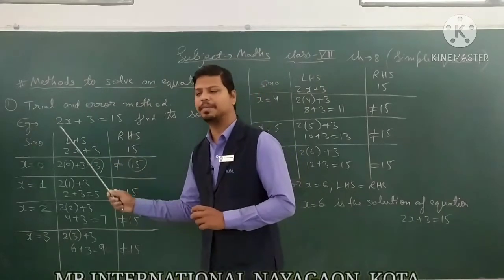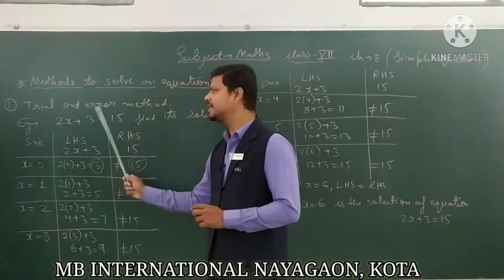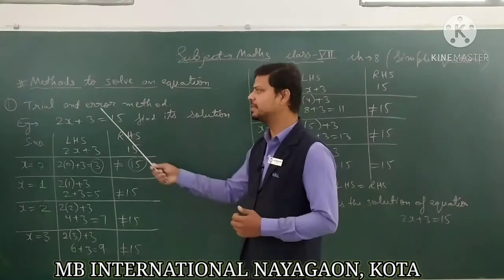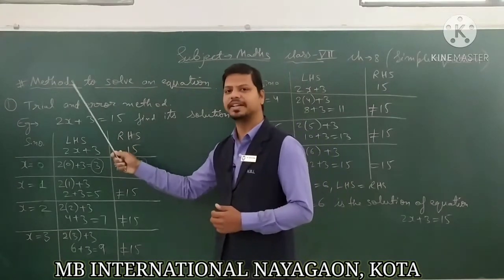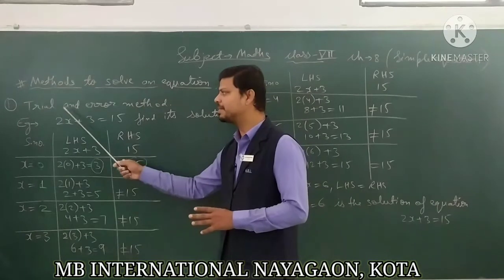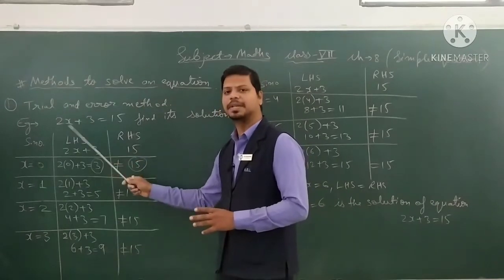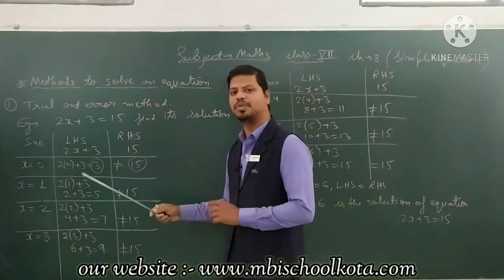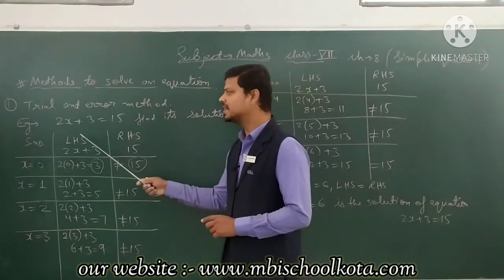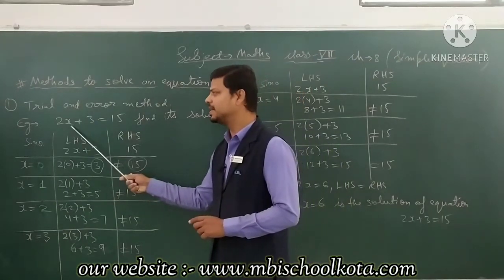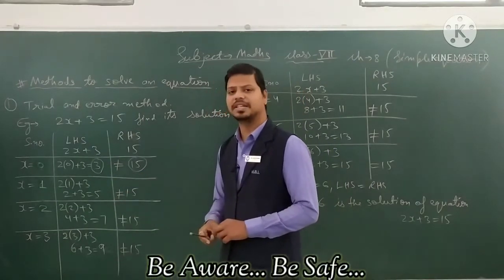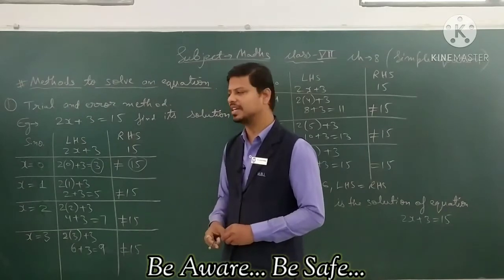The first method to solve an equation is the trial and error method. Trial and error means you have to keep trying — putting different values like 1, 2, 3, 4, 5, 6 in place of x, whichever number satisfies both sides of the equation.